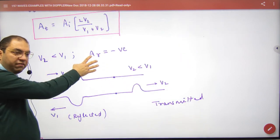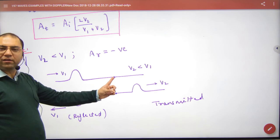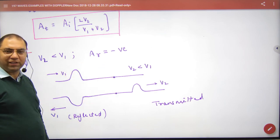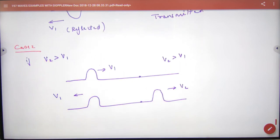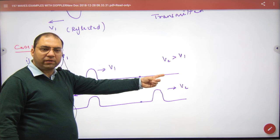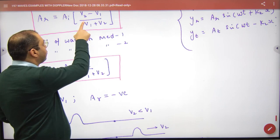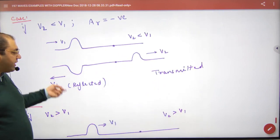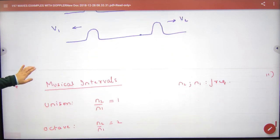Negative means the crest becomes trough. If it is a fixed end, then the crest becomes trough. That is the proof. And if v2 is greater than v1, means the speed in the other medium is faster, then AR will remain positive. AR positive means crest will remain crest.